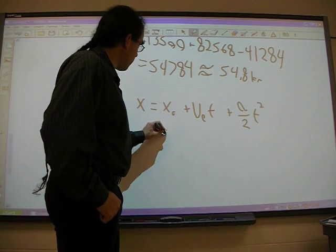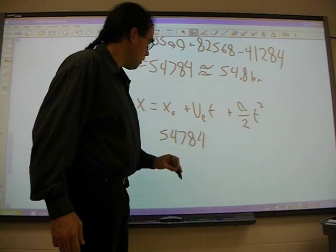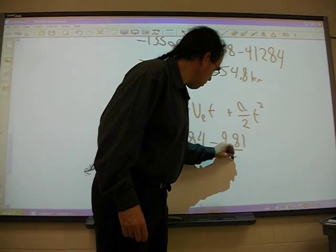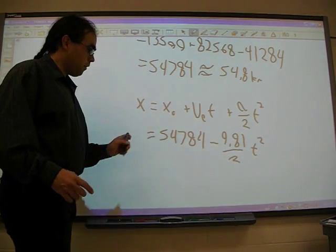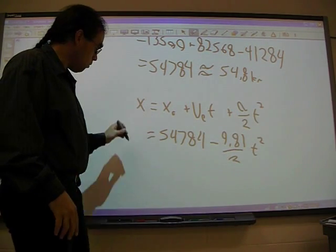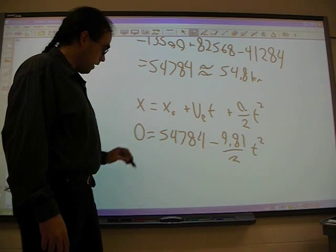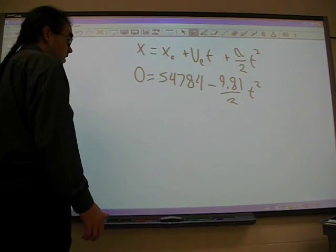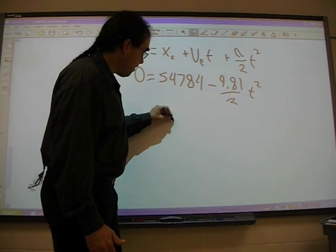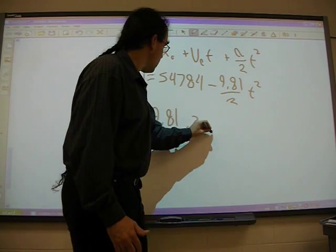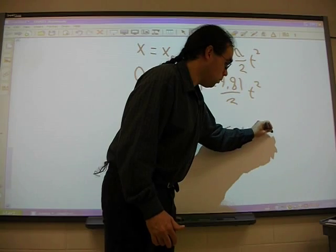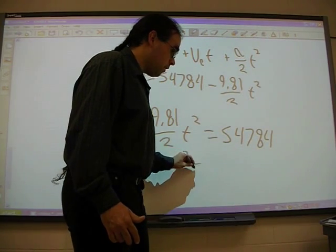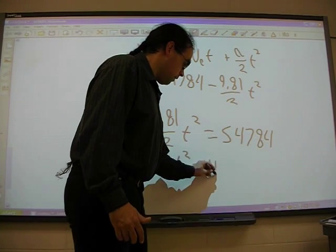And so we take our distance equation. X equals x of zero plus v of zero times time plus a over 2 t squared. That a once again is equal to 9.81. And our x of zero is our 54.8. I'm going to write it in full precision here: 54,784 minus 9.81 over 2 t squared. Our resulting altitude at the end of this is going to be zero. So our final condition here, our final offset in altitude is going to be zero. So what we do is we solve this for t.